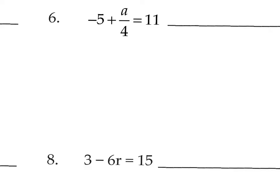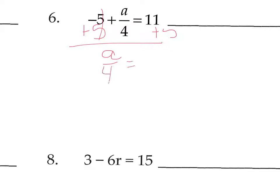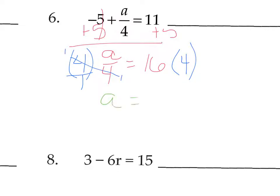We have negative 5 plus a over 4 equals 11. This is a divide, so we don't start there — we start with the add/subtract. Get rid of the negative 5 by adding 5 to both sides, giving us a over 4 equals 16. To undo divide, we multiply both sides by 4. Those 4s cancel, and we end up with a equals 16 times 4, which is 64.